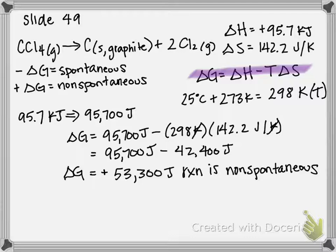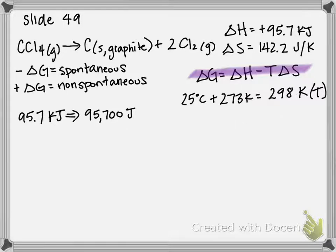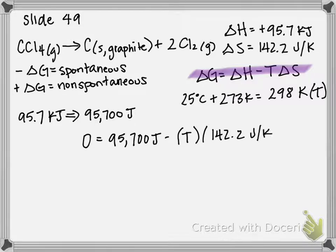For part B, we're going to determine the temperature the reaction becomes spontaneous. We're going to set delta G equal to zero. We're going to plug in our delta H, which we were given, the 95,700 joules, minus we're looking for T times 142.2 joules per Kelvin.